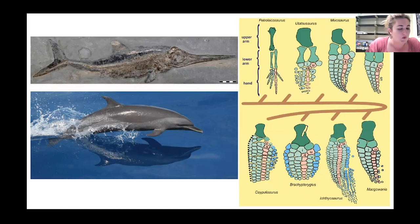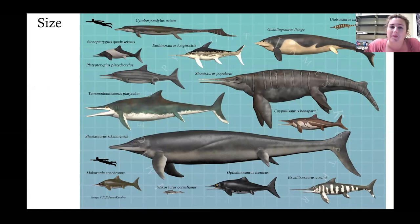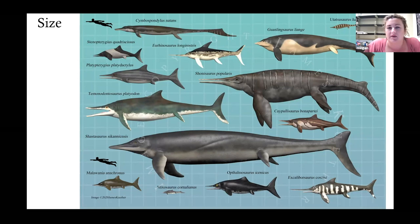Ichthyosaurs reached some amazing sizes, mainly when they first appeared. Shonisaurus was found at about 21 meters long, which is huge. But by the Jurassic you didn't get things that really got that big - most of the ichthyosaurs in the Jurassic and Cretaceous were only about two to five meters long, similar to Platypterygius or Ophthalmosaurus - roughly the size of a bottlenose dolphin.